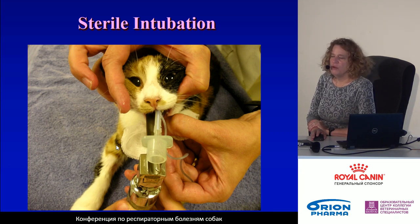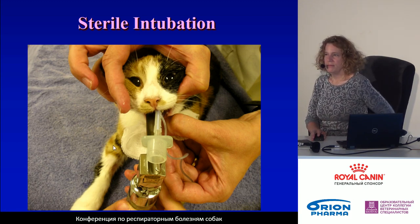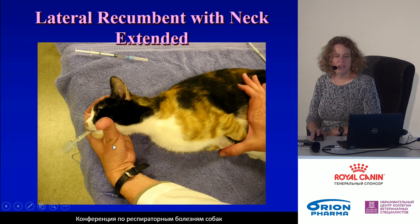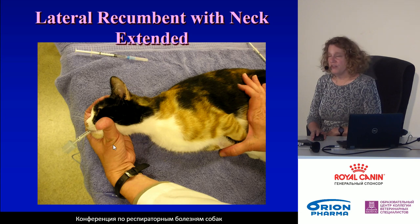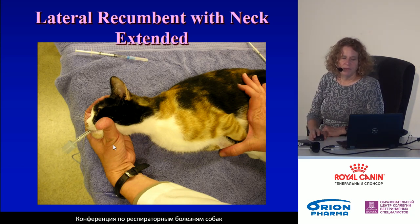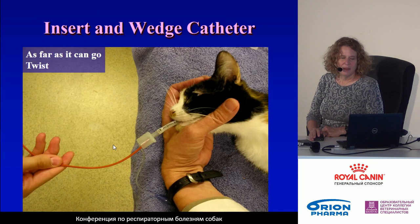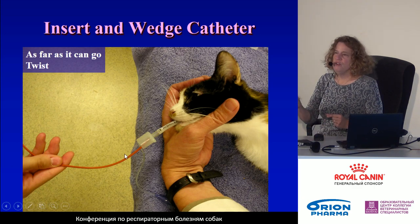The procedure itself is very simple. Once the animal is anesthetized deeply enough to intubate, you simply pass the endotracheal tube. Once the tube is in place, lay the cat or dog down in lateral recumbency and stretch the neck out so that you make a straight shot from the mouth to the lungs. Then take the red rubber catheter with the tip cut off and enter it into the endotracheal tube, passing it down as far as it goes.